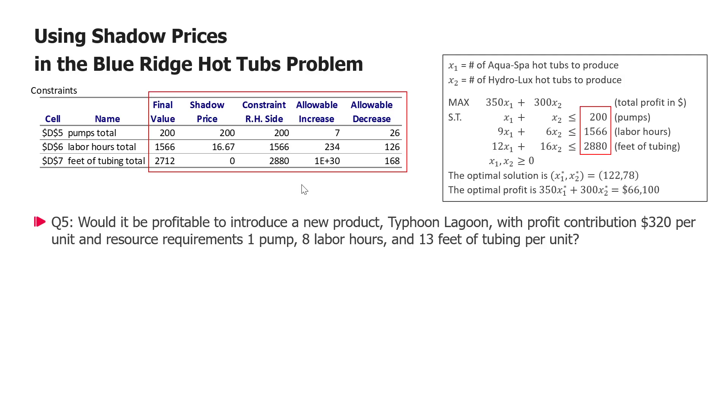In this video I want to talk about other uses of shadow prices and also about something called reduced cost. So again we are analyzing the second part of the sensitivity analysis report with information about constraints and the shadow prices and we are considering the following question.